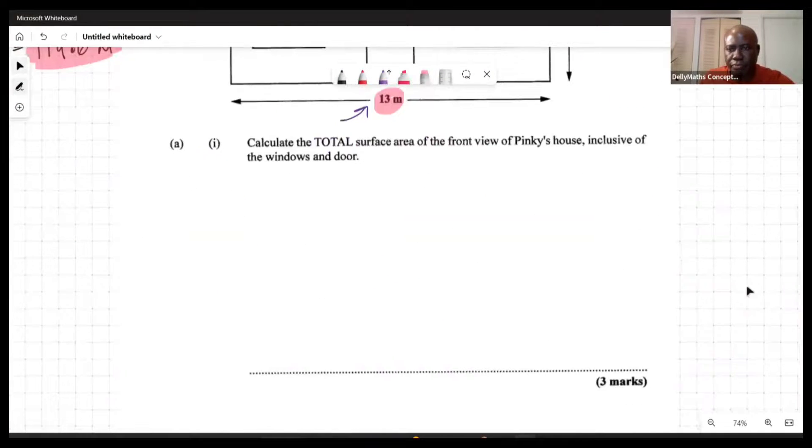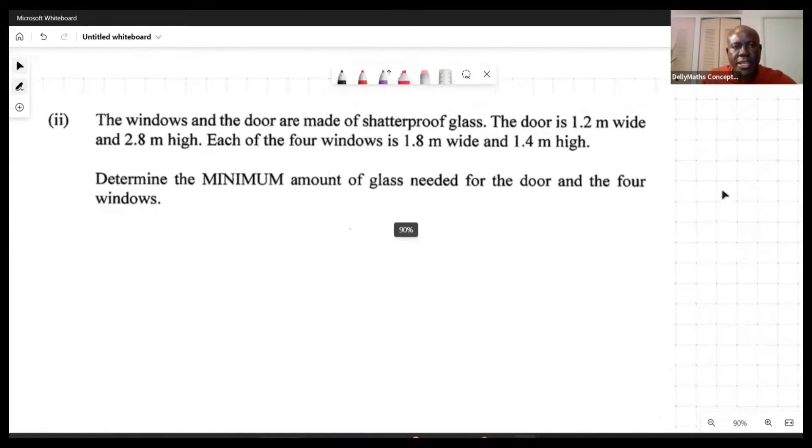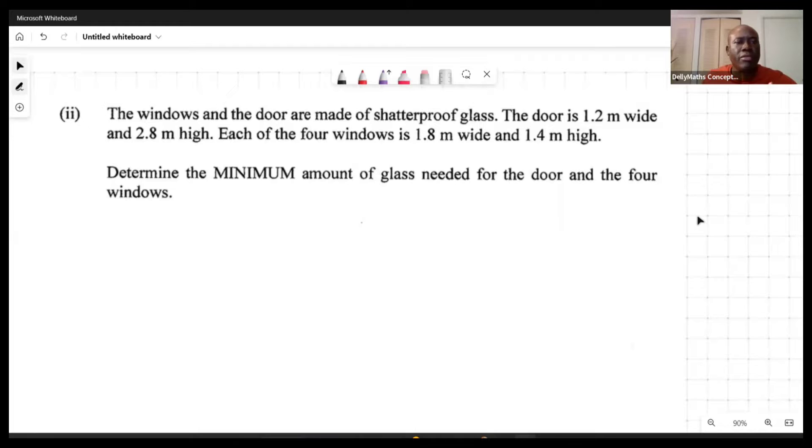Let's see what else we have there. The second part of this question says here that the windows and doors are made of shatterproof glass. The door is 1.5 meters wide and 2.8 meters high. Each of the four windows is 1.8 meters wide and 1.4 meters high. Determine the minimum amount of glass needed for the door and the windows.